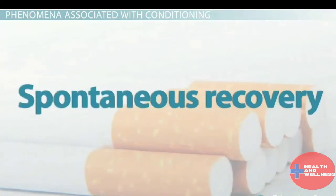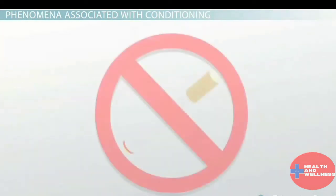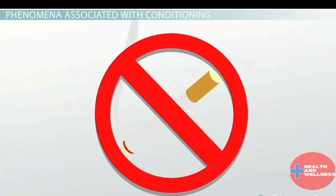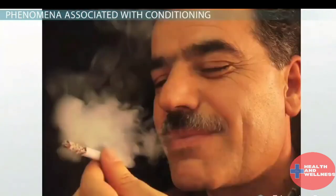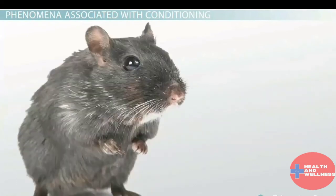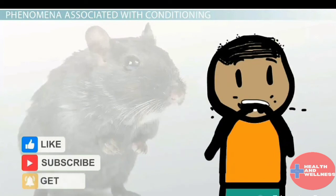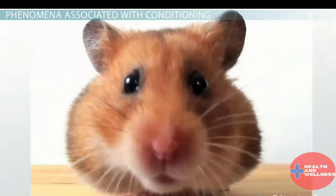Spontaneous recovery refers to the unexpected recurrence of a conditioned response after it has shown extinction. It is usually short-lived and a weakened version of the conditioned response. For example, if you used to smoke cigarettes whenever you felt anxious, spontaneous recovery would occur if you haven't smoked for years but suddenly crave a cigarette during a stressful situation. Stimulus generalization refers to showing a conditioned response to a stimulus that differs from but is similar to the conditioned stimulus — for instance, if an experience made you scared of mice and you also feel scared around a hamster.